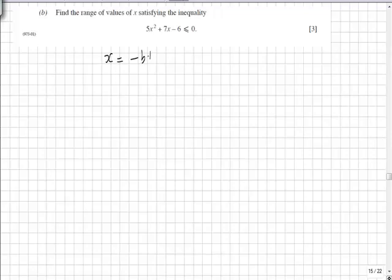x equals minus b plus or minus the square root of b squared minus 4ac, all over 2a, given that a is 5, b is 7, and c is minus 6.